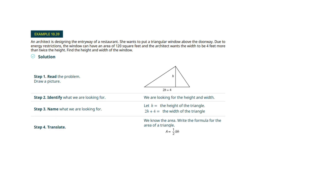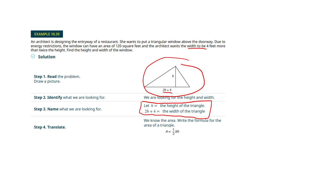Now we've moved to triangles. They're giving us the area of this triangle and telling us we don't know the height, but we know that the width is 4 feet more than twice the height. A picture would be helpful here. They told us the area, so we need a formula — the area is one-half the base times the height.